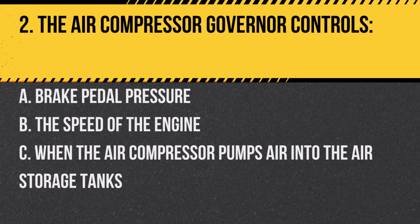Question 2. The air compressor governor controls: A. Brake pedal pressure. B. The speed of the engine. C. When the air compressor pumps air into the air storage tanks. Answer C. When the air compressor pumps air into the air storage tanks. The governor maintains air pressure within a specific range in the system.